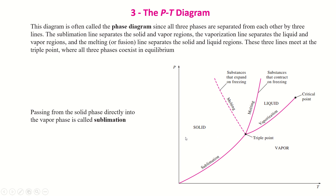The third diagram is the P-T diagram, which shows all three states of a substance. On this diagram there is a solid region, a liquid region, and a vapor region. A new term introduced here is sublimation, which is the process in which the solid phase is directly converted into the vapor phase. All three diagrams — the T-V diagram, P-V diagram, and P-T diagram — are used to study the properties during a phase change process of a pure substance.